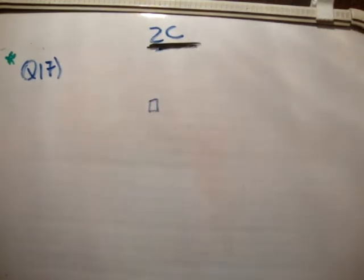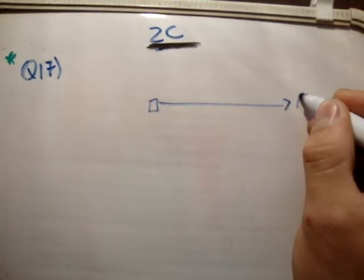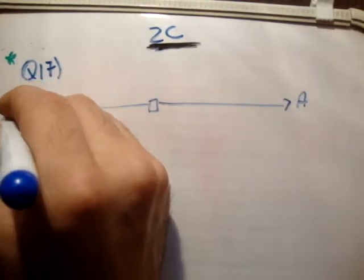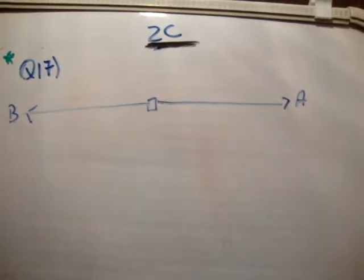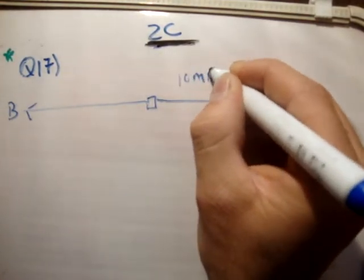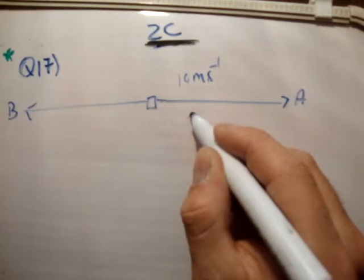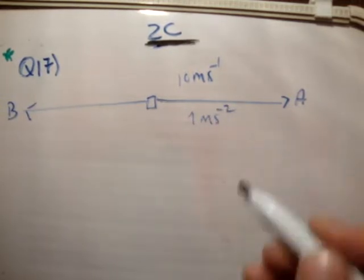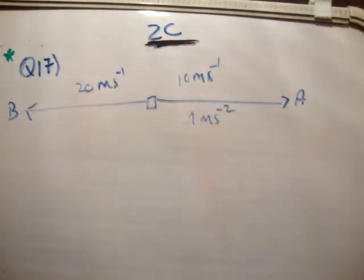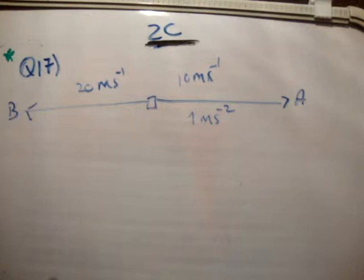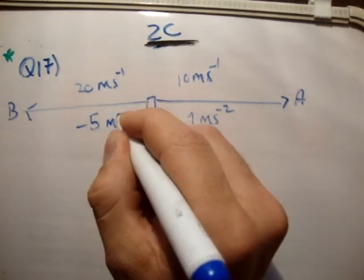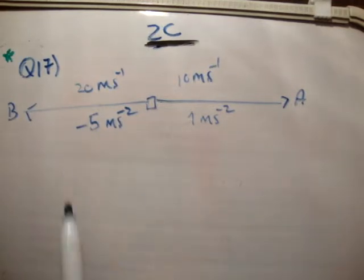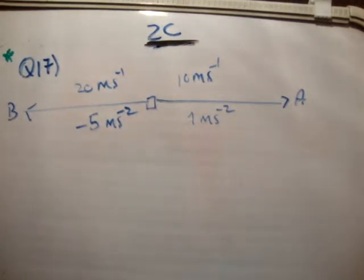So, once again, I'm going to say that they start at this position here. Car A goes in this direction, car B goes in this direction, clearly because they are in opposite directions. Car A has a speed of 10 metres per second and an acceleration of 1 metres per second squared. Car B is travelling at 20 metres per second, not metres per second squared, and decelerating at minus 5 metres per second squared. Decelerating, so you're using negative. So the question is, how far apart will it be when the second car comes to rest?